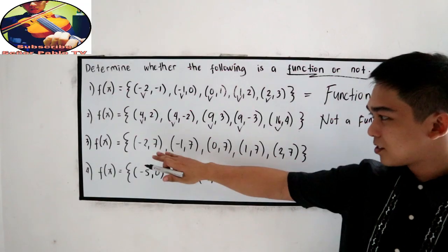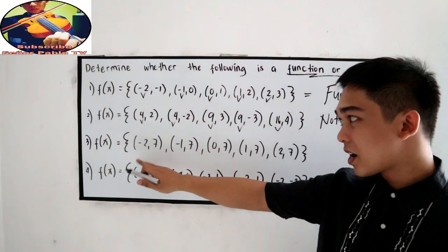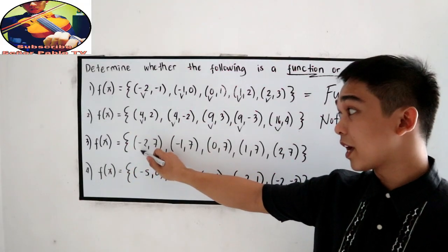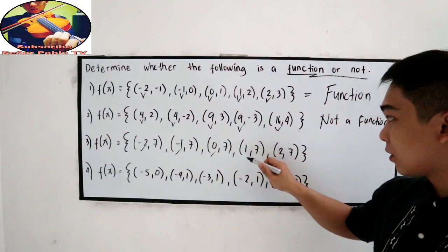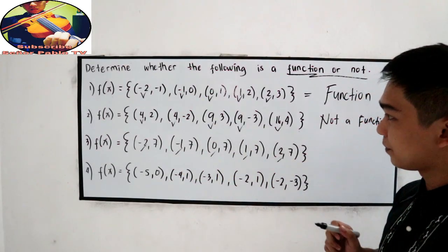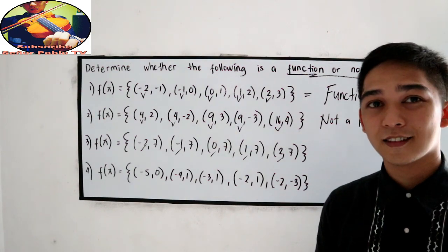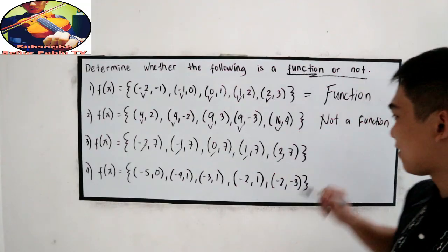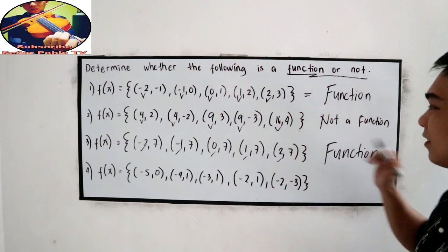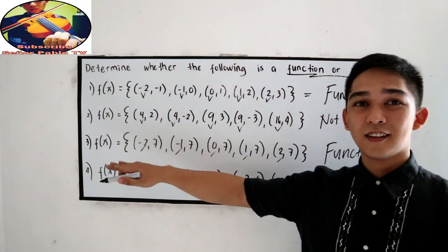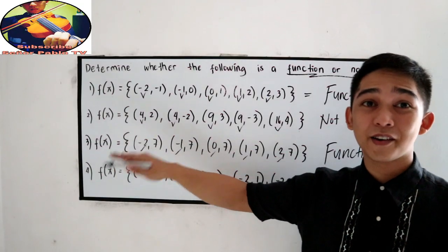Next. Our abscissas are negative 1, negative 2, negative 1, 0, 1, 2. Function or not? It is a function. Why? Our abscissas did not occur twice.